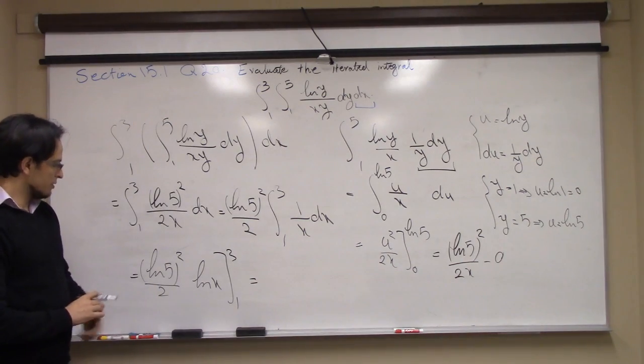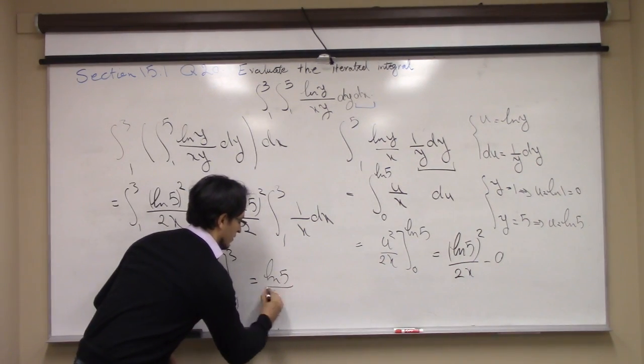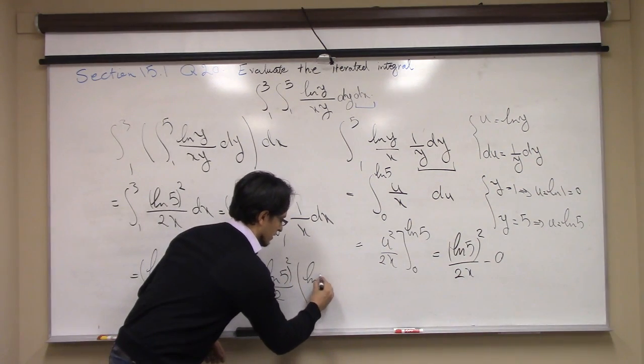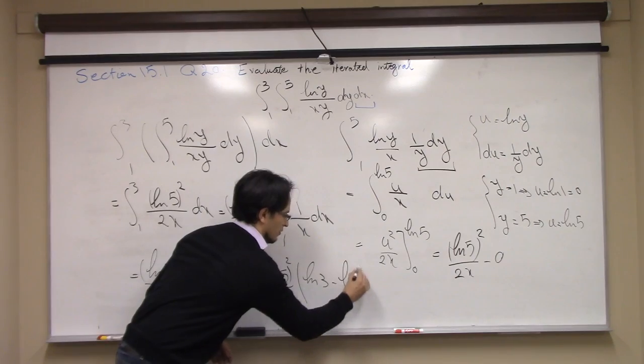So from 1 to 3, I have ln 5 squared over 2. Plug in the upper bound: ln 3 minus ln 1.